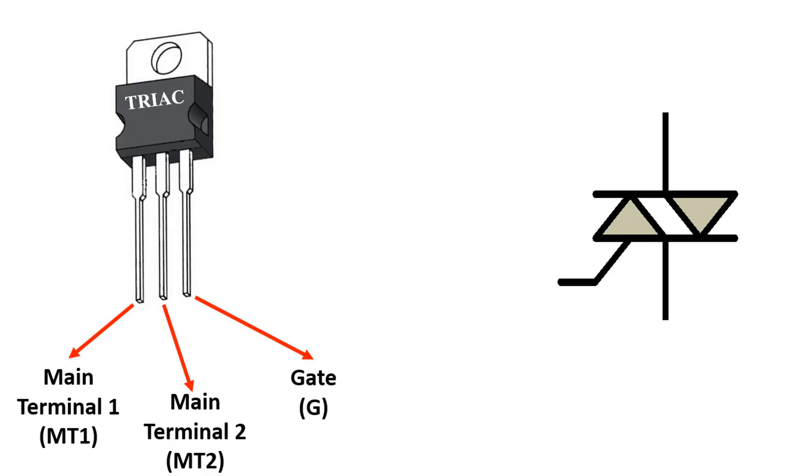The abbreviations MT1, MT2 and G are used for these. In the symbol, the pin naming is like this. Instead of MT1 and MT2, you may encounter the use of naming as ANODE1 and ANODE2 in some sources.